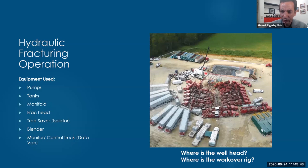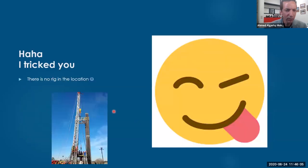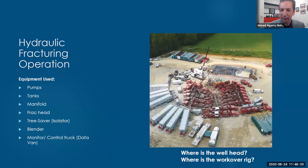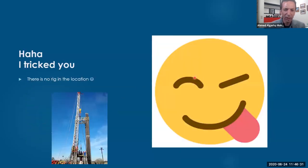My second question: where is our workover rig? I will give you a few seconds to think about it. Try to find where is the workover rig? Do you see it? There is no workover rig - I'm tricking you. So this is our workover rig - do you see something like this in the location? No, it is just a crane. So we call this a rigless operation. There is no workover rig, we use a crane.